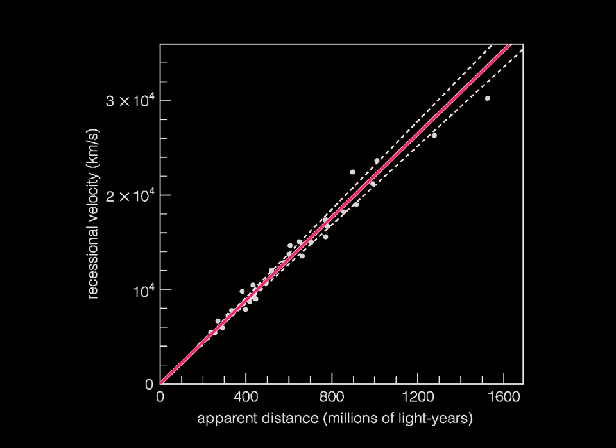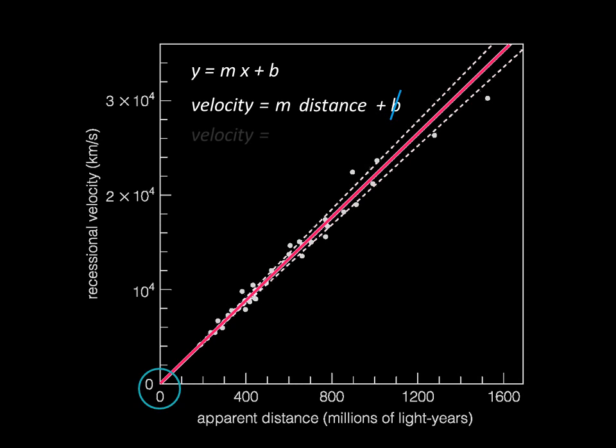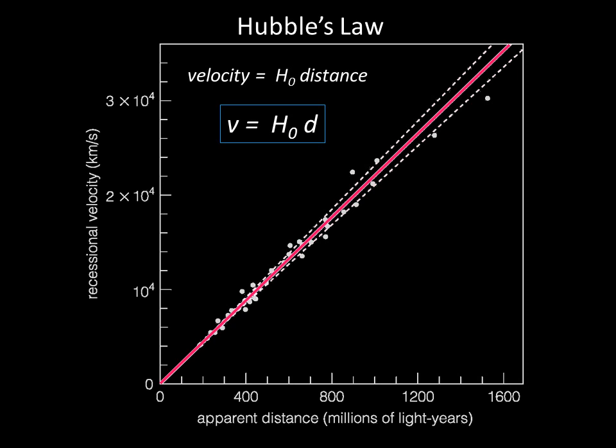Here is a newer plot of velocity versus distance, where each circle represents a galaxy. Basically, we have a straight line. You may recall that there is an equation for a line, usually written as y = mx + b. The y in this case is velocity, m is our slope, and x is distance. The y-intercept b is zero. Since this is a special plot, we give the slope a special name: Hubble's constant, H₀. The equation of our line — velocity equals H₀ times distance — is known as Hubble's Law.